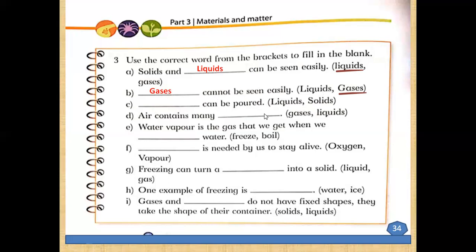Number c: dash can be poured — liquids can be poured. Number d: air contains many dash — gases or liquids? Air is a mixture of different gases, so air contains many gases — like nitrogen, oxygen, carbon dioxide, and some other gases.